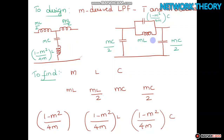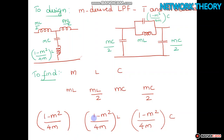From the diagrams, the values we need to find are: mL/2, mC/2, mL, (1 - m²/4m)·L, and (1 - m²/4m)·C. We can find the common factor (1 - m²/4m) separately, then multiply by L and C respectively. But before all of these, we first need to find the values of m, L, and C.